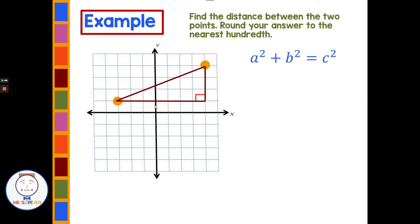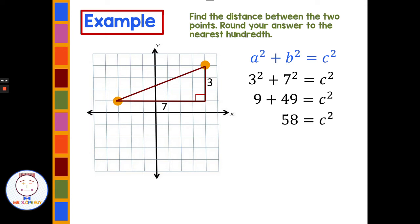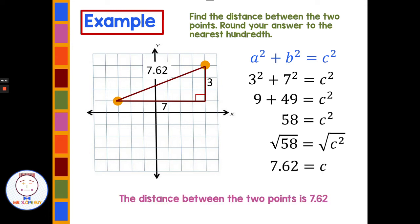Counting the spaces: seven spaces along one side, and three spaces along the other. Remember, we're counting spaces, not lines. So I put three and seven into the Pythagorean Theorem: A squared plus B squared equals C squared — three squared plus seven squared, or seven squared plus three squared, it doesn't matter, but C must be the hypotenuse. Three squared is nine, seven squared is 49, and nine plus 49 is 58. The square root of 58 is not one I know off the top of my head, so I put it in my calculator and get 7.62. The distance between these two points, to the nearest hundredth, is 7.62.